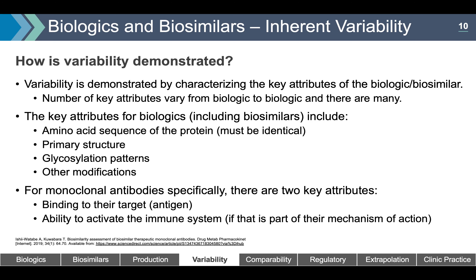How is this variability demonstrated? Variability is demonstrated by characterizing the key attributes of the biologic or biosimilar. The number of key attributes varies from biologic to biologic. Key attributes include the amino acid sequence of the protein, which must be identical (primary structure), glycosylation patterns, and other modifications. For monoclonal antibodies specifically, there are two additional key attributes: binding to their target antigen, and the ability to activate the immune system if that is part of their mechanism of action — for example, antibody-dependent cellular cytotoxicity (ADCC) and complement-dependent cytotoxicity (CDC).